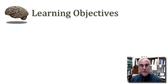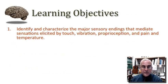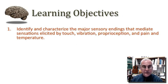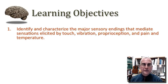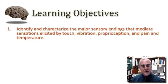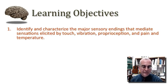We have several learning objectives today. I want you to be able to identify and characterize the major sensory endings that mediate sensations elicited by touch, by vibration, and by proprioception — these are all elements of mechanosensation. I will introduce the receptors for pain and temperature, although we will focus on those in a subsequent tutorial.